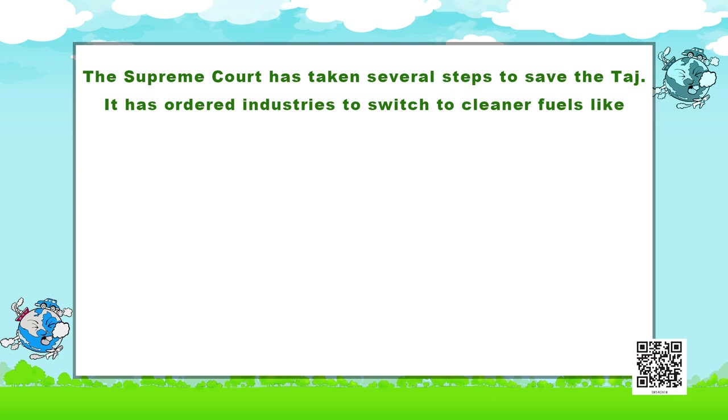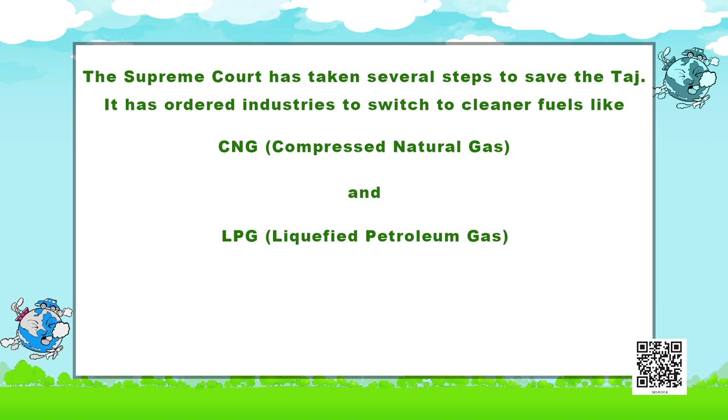From this we can say that air pollution is not only affecting living beings but it is also destroying non-living ones. The Supreme Court has taken several steps to save the Taj. It has ordered industries to switch to cleaner fuels like CNG, which is compressed natural gas, and LPG, which is liquefied petroleum gas, which cause very less pollution. Moreover, automobiles should shift to unleaded petrol over the Taj zone.